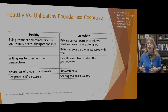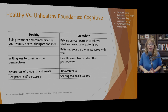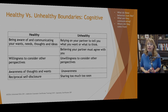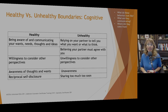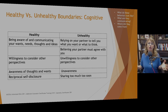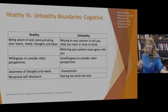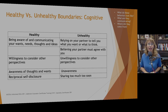Unhealthy cognitive boundaries include relying on your partner to tell you what you want or think. It's important to know what you want and be able to assert it — it doesn't mean you'll always get your way, but you do need to know and communicate your preference. It's also unhealthy to believe your partner or friend must agree with you all the time — that communicates they're not allowed to have their own boundaries. Unwillingness to consider other perspectives — 'my way or the highway' — is not a healthy boundary.